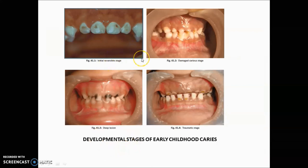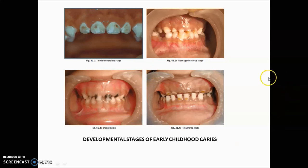This is the developmental stages of early childhood caries. The initial reversible stage can be treated with remineralizing agents and fluoride therapy. In the damaged caries stage, restoration is needed along with fluoride therapy. In a deep lesion, pulpectomy is mandatory along with crowns — either strip crowns or zirconia crowns. In the traumatic stage, if the root is present, do pulpectomy followed by post and crown; otherwise extract the teeth and give a Groper appliance.